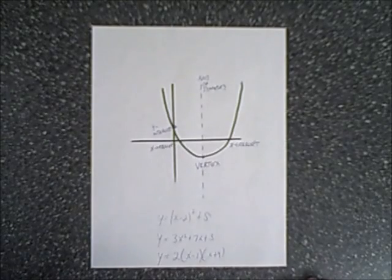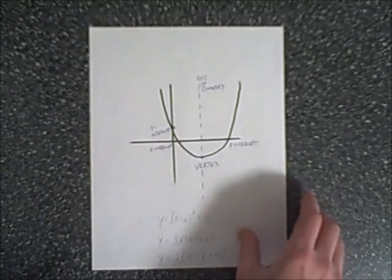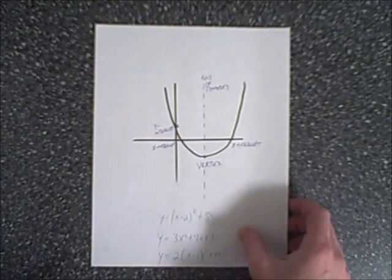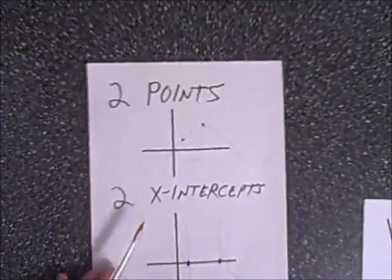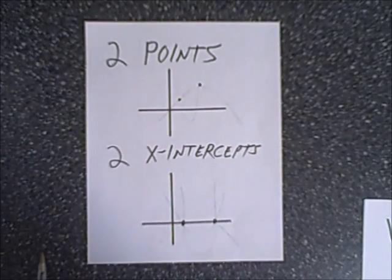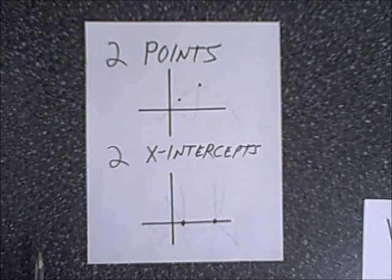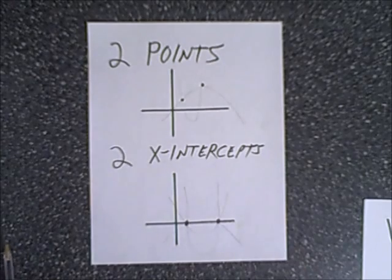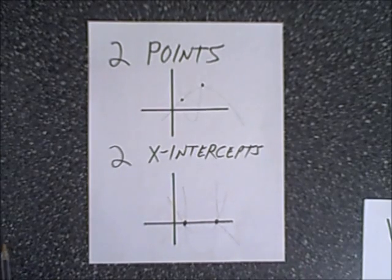But what happens if instead of being given the equation and graphing it, you're simply given a couple of points and you have to determine the equation? In this video we're going to look at three examples, and we're going to take points that are given to us and construct the equation and from there the graph. As most of you know, you need basically three coplanar points to form a quadratic.